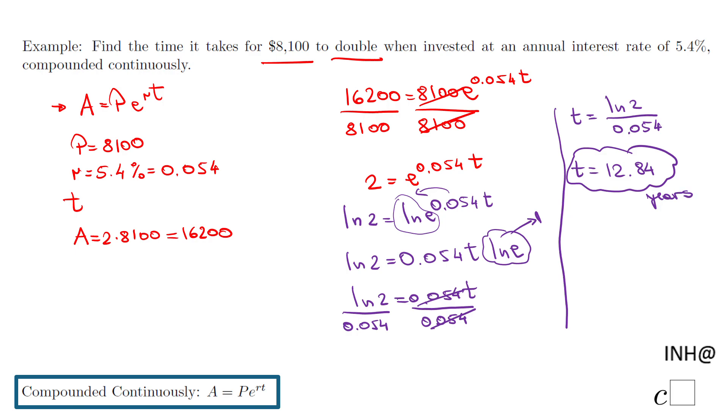In fact, for any amount, it can be any number you have. In order to double using this rate, you need almost 13 years.